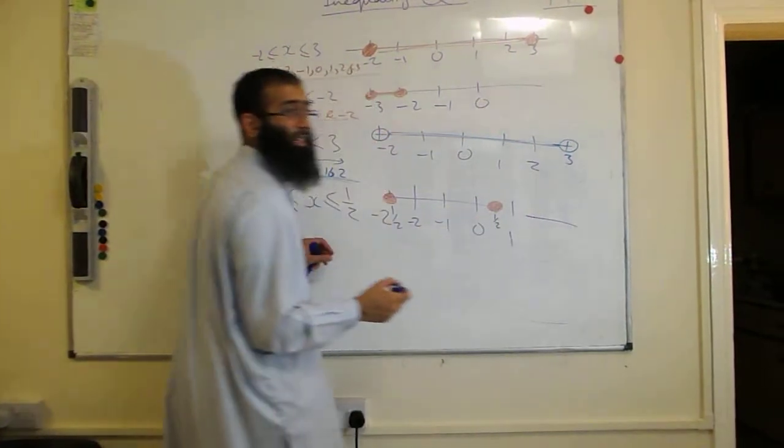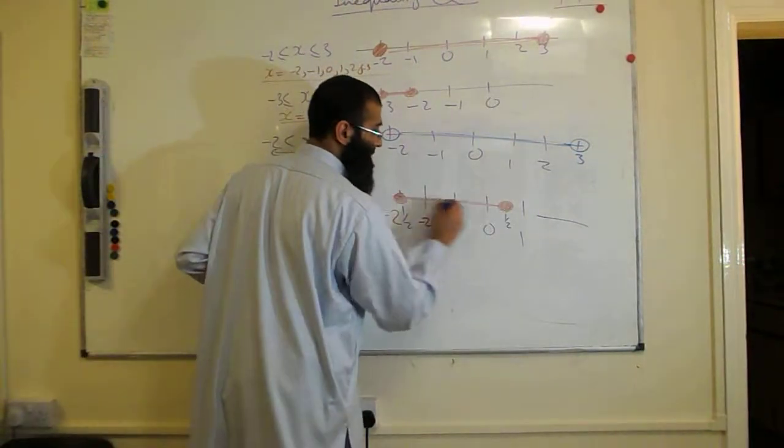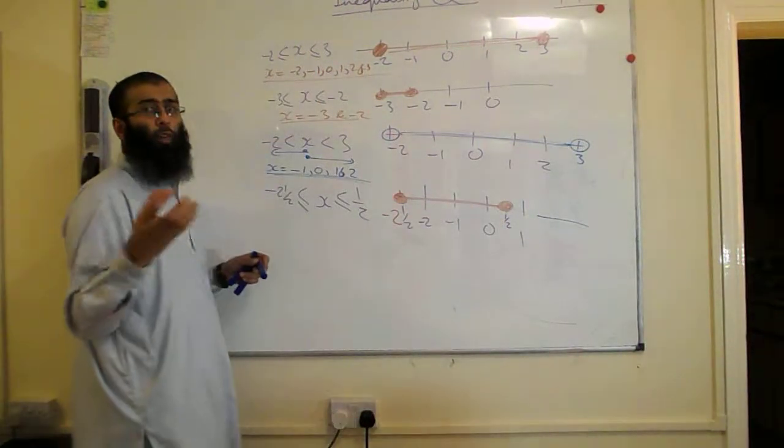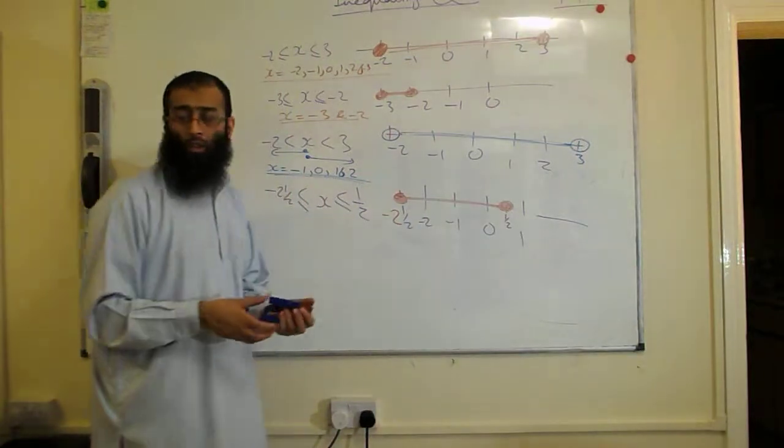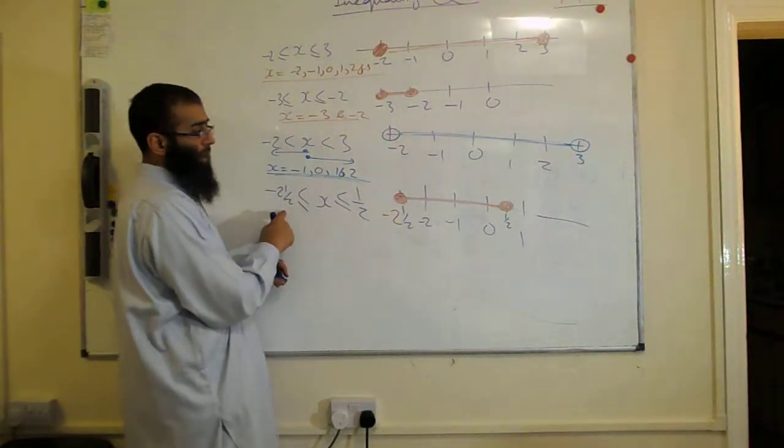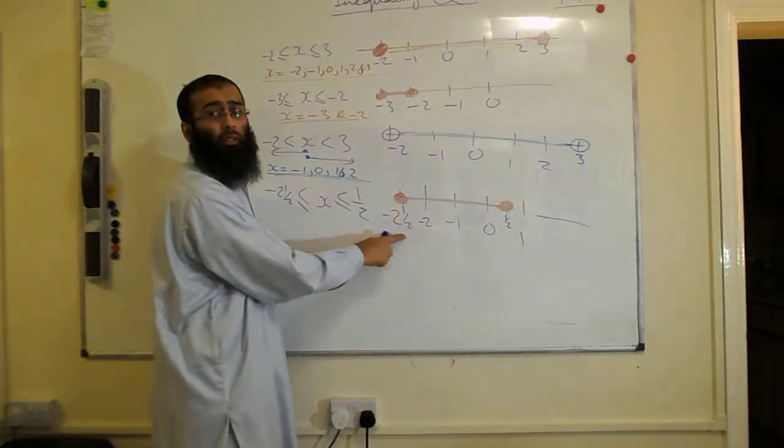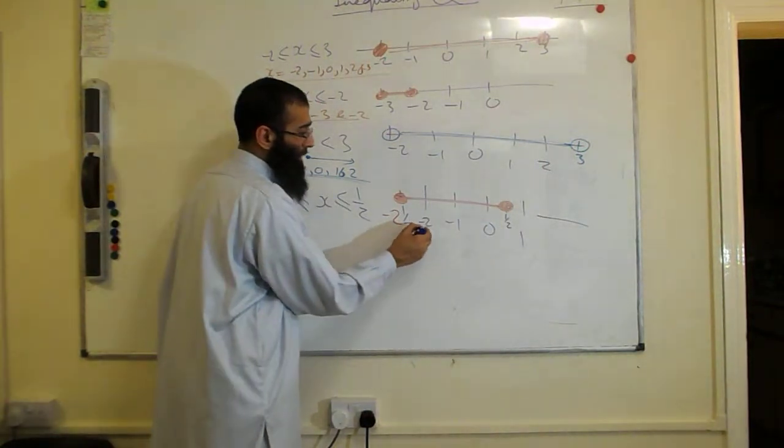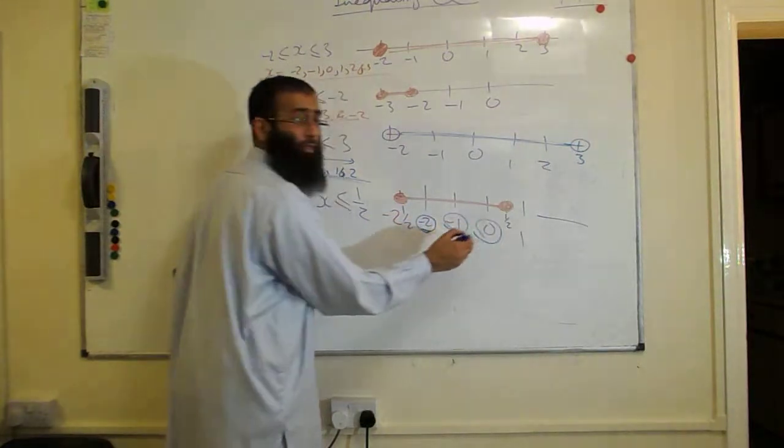Now don't forget we're looking for the integer values. The integer values here are going to be, because it starts at minus 2 and a half, that's not an integer value, it's a fractional value there. So the integer value here will be minus 2, minus 1, and 0.